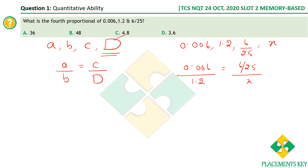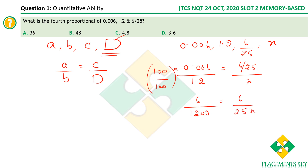Since we have decimals, let's convert to integers. We multiply by 1000 and divide by 1000 — you can't change the value. So 1000 × 0.006 = 6, and 1.2 × 1000 = 1200. So 6/1200 = (6/25)/x. The 6s cancel, giving 25x = 1200, so x = 48.